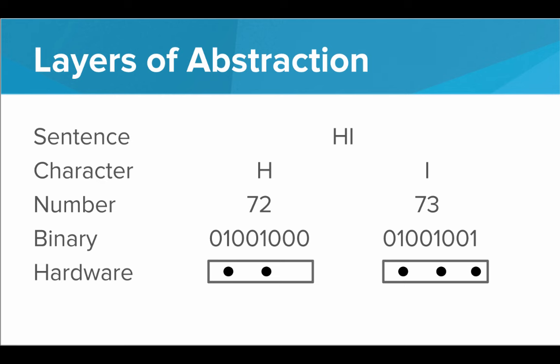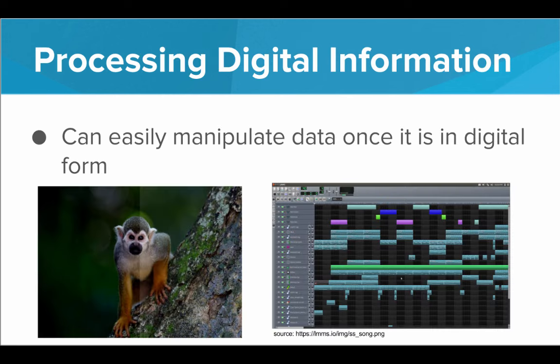So why is it important to be able to represent information digitally? Well, once information is in digital form we can do a lot of cool things with it. We can easily manipulate data just by tweaking those numbers a little bit. For example, we can add a filter to an image to make it darker or brighter, or we can remix a song by manipulating certain parts of the data stream that makes up the song.